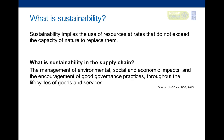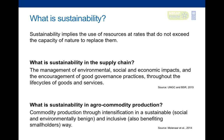So what is sustainability in the supply chain? In the supply chain, sustainability refers to the management of environmental, social, and economic impacts and the encouragement of good governance practices through the lifecycle of goods and services. In agro-commodity production, it's basically the same — taking into account that there are social and environmental aspects that must be considered, and that producers play one of the most important roles in the supply chain.